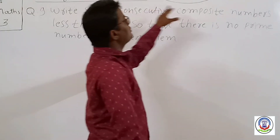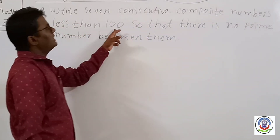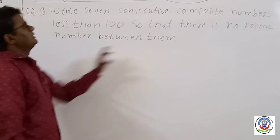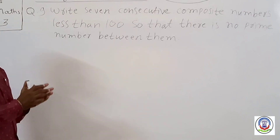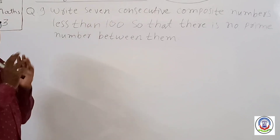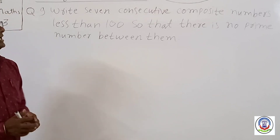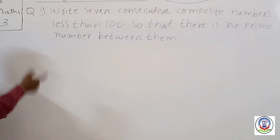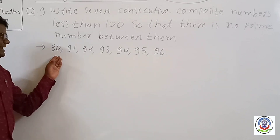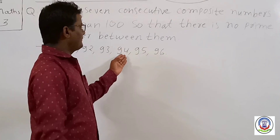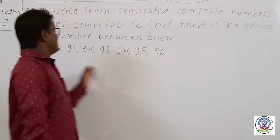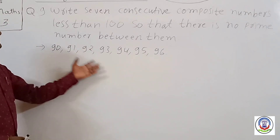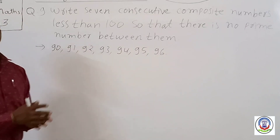Question 9: Write seven consecutive composite numbers less than 100, so that there is no prime number between them. The answer is: 90, 91, 92, 93, 94, 95, and 96. These are seven consecutive numbers — consecutive means one after another — and there is no prime number among them.